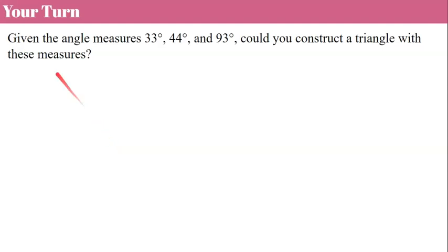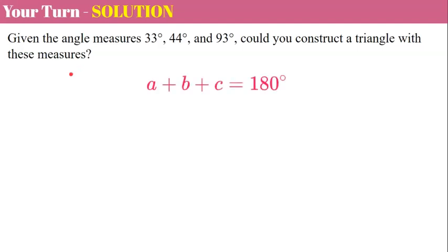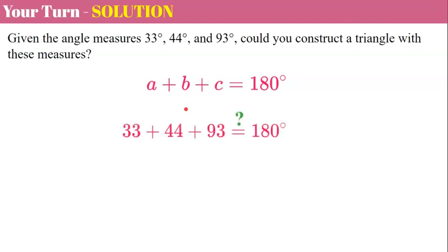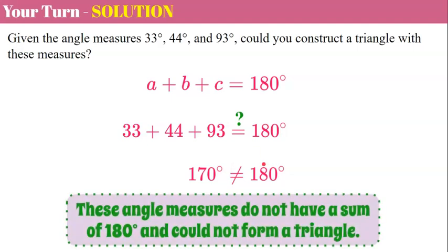Now it's your turn. Given the angle measures 33 degrees, 44 degrees, and 93 degrees — could you construct a triangle with these angle measures? Please pause now and come back when you're ready. Welcome back. So now we're going to use our triangle sum theorem and we call this the converse. Conversely, if the three angle measures need to equal 180 and we can find a missing one, we can also check to see if three angle measures could form a triangle. So we put these three angle measures in for A, B, and C and check to see if together they equal 180 degrees. When we add them together: 33 plus 44 plus 93 is 170. 170 degrees does not equal 180 degrees, therefore these three angle measures do not have a sum of 180 and could not form a triangle.